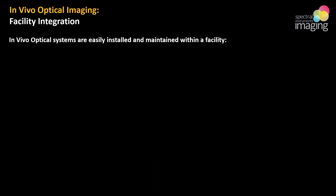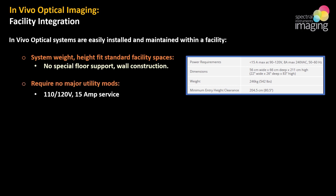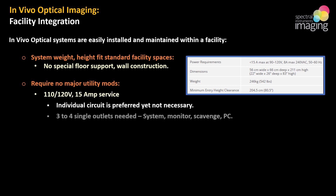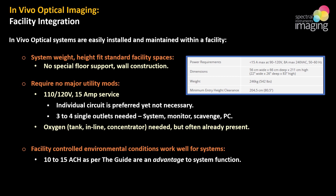Let's talk about facility integration and how easily these systems are installed and maintained. System weight and height are not unusual and fit into pretty standard rooms — no special floor support, wall construction, or major utility modifications needed. Typically standard house current is just fine; an individual circuit would be helpful but not necessary. You need three to four single outlets for the system monitor, scavenging, and the PC. Oxygen will be needed, delivered by tank, in-house system, or oxygen concentrator, for the anesthesia setup. Facility conditions within standard research spaces — 10 to 15 air changes, room temperatures of 65 to 75°F, and 40 to 60 percent humidity — all work to the system's advantage.